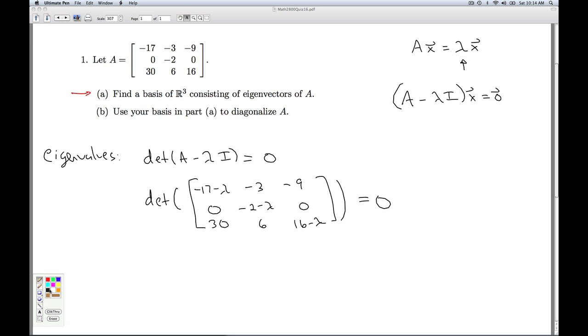I get a positive negative two minus lambda times the determinant. Wipe out the row and column that's in. So I get negative two minus lambda times negative 17 minus lambda times 16 minus lambda minus negative 9 times 30, and that's plus 270. So now I just need to sort out what's happening in here, and then hopefully that will factor nicely and I can get my eigenvalues from that.